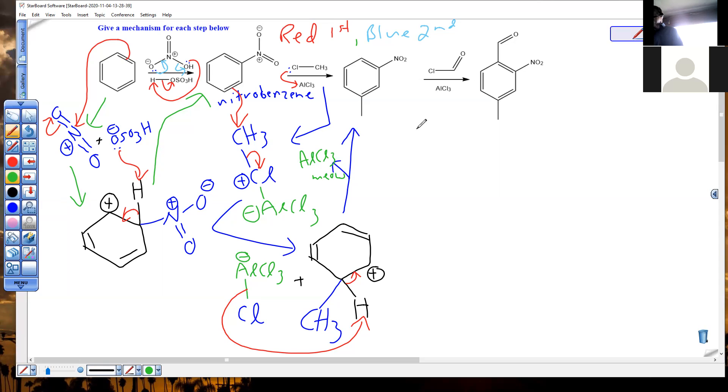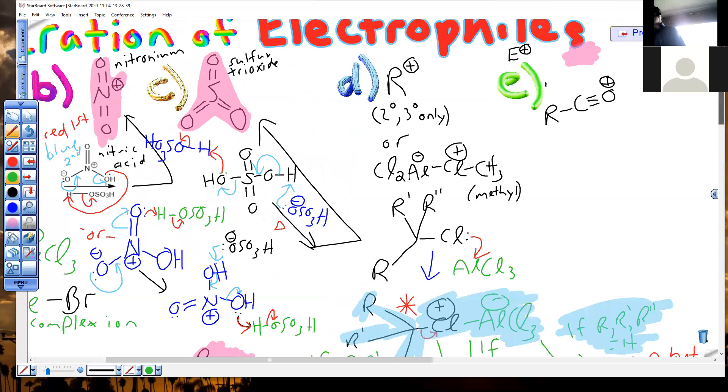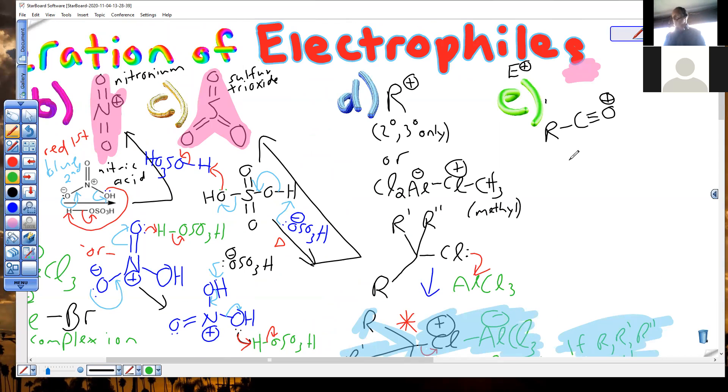And now we have this here. And I just realized we didn't finish our previous discussion of mechanisms. We went A, B, C, D, but we did not go to E. So, how do we generate this electrophile? This electrophile is called an acylium. Seriously. It's an acylium.